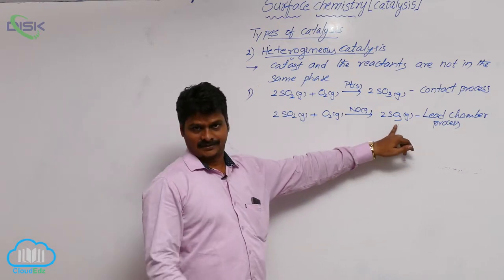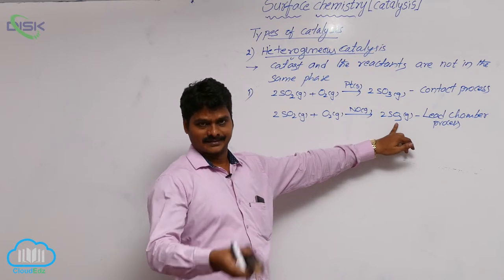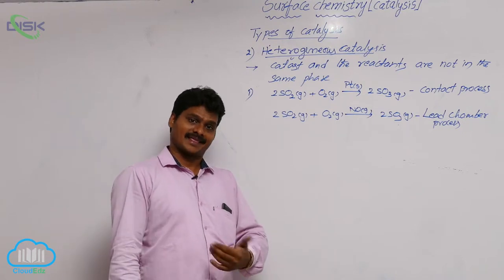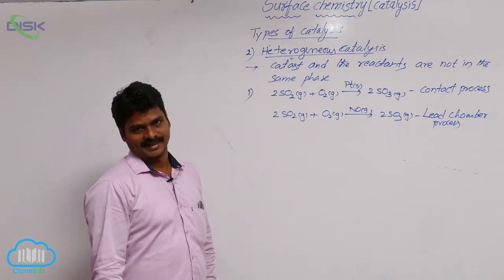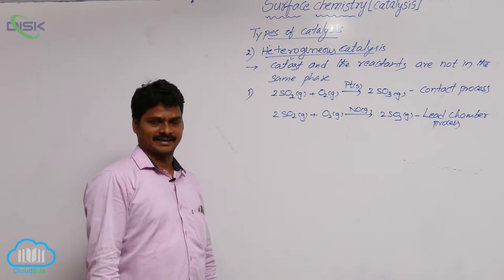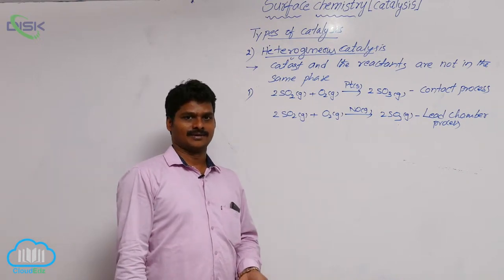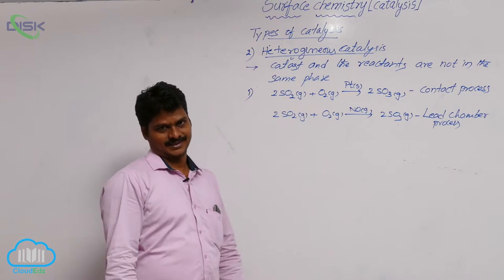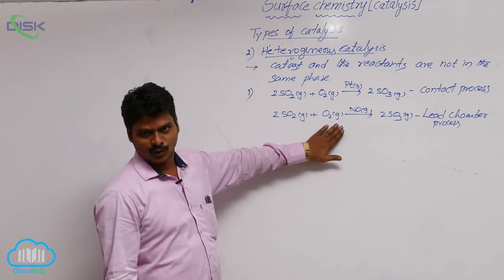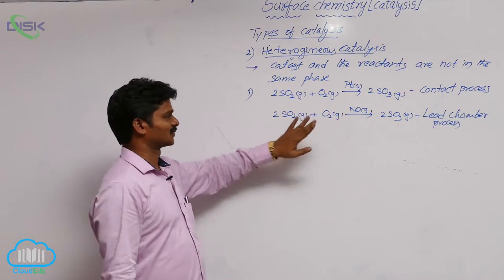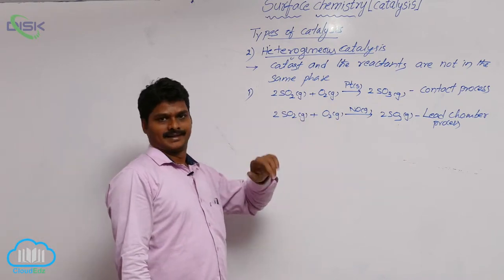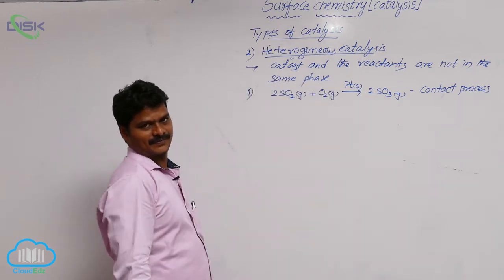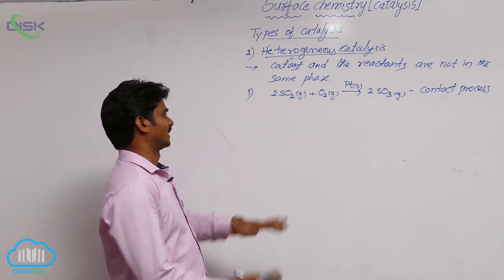In the lead chamber process, the SO3 formed is further used for the preparation of sulfuric acid. That is why sulfuric acid has another name: chamber acid. It is called so because of its preparation by the chamber process. The chamber process is homogeneous catalysis, while only the contact process is heterogeneous catalysis.